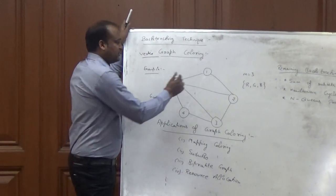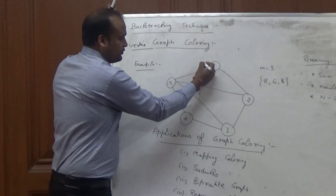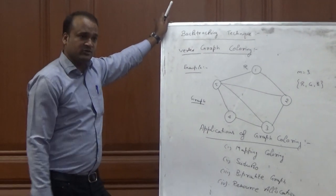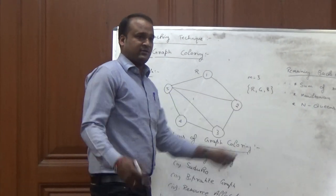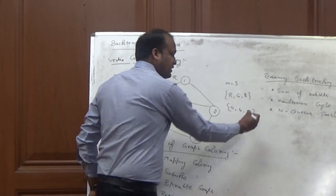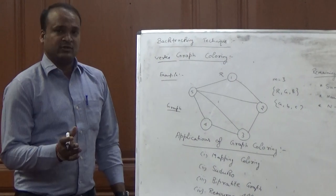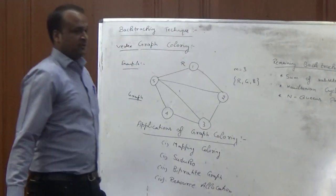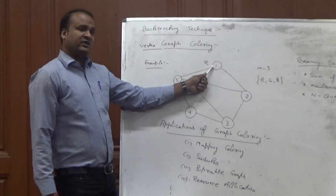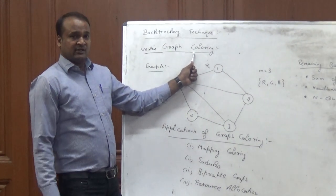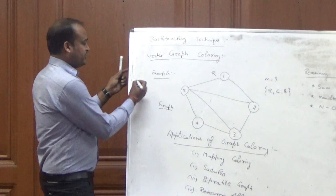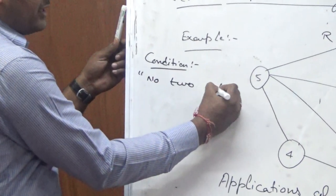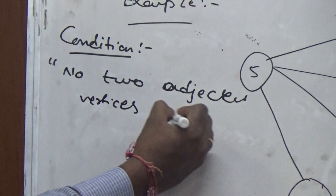Here, we will color each vertex. Please note the colors that will be used: red, green, and blue. You can rename them as A, B, C for your comfort, but since we prefer meaningful terms, we will use the color names red, green, and blue. So I will take an example — the first vertex will be colored red. But in the case of graph coloring, the condition is: no two adjacent vertices have the same color. Point to be noted — what is the condition for graph coloring? No two adjacent vertices have the same color.